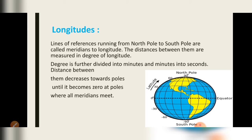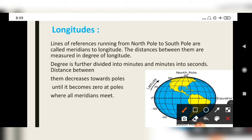Longitudes: as you can see in this picture, these lines are longitudes — running from north pole to south pole. Lines of reference running from north pole to south pole are called meridians of longitude. The distances between them are measured in degrees of longitude. Degrees are further divided into minutes, and minutes into seconds. The distance between them decreases towards the poles until it becomes zero at the poles where all meridians meet.